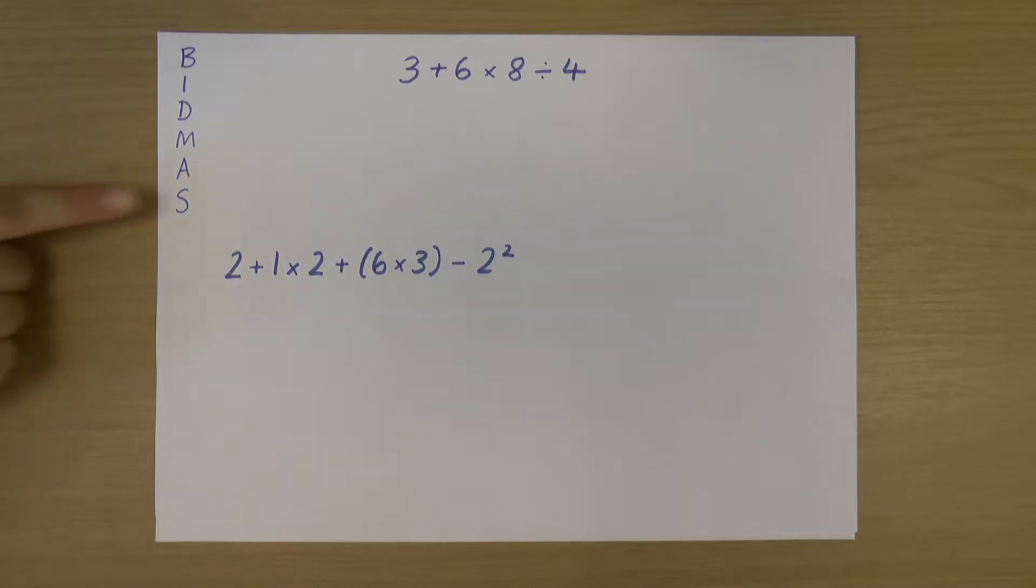And the same is true for addition and subtraction. So when we have both addition and subtraction in a sum, then again, they've got equal priority. We go left to right.